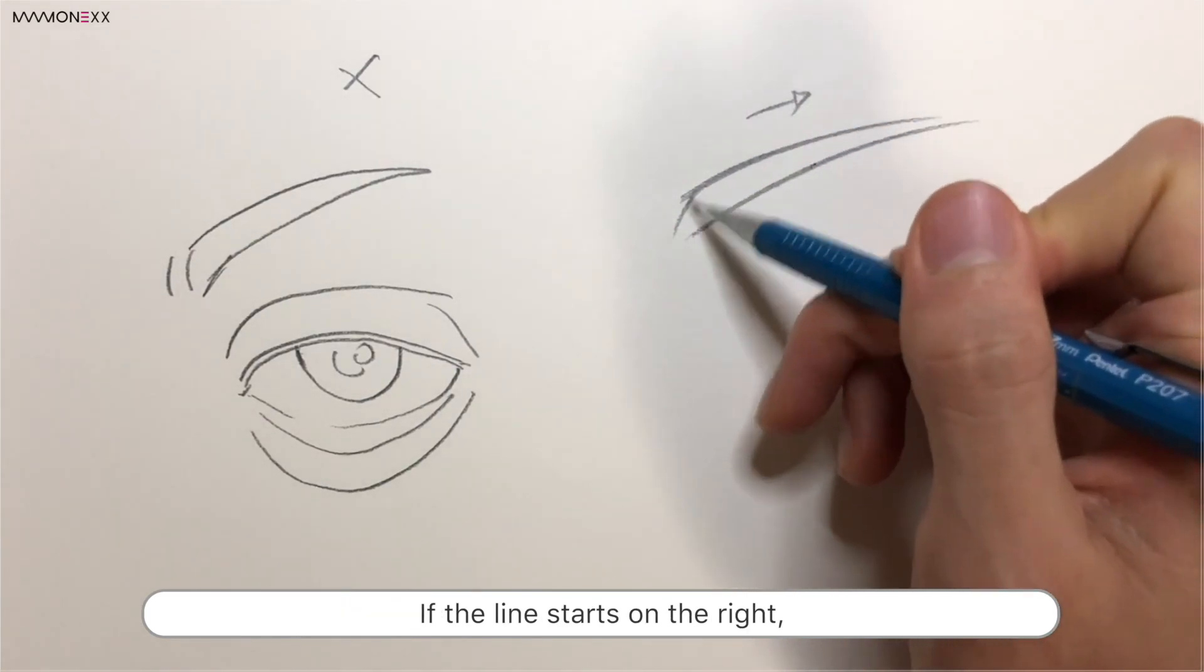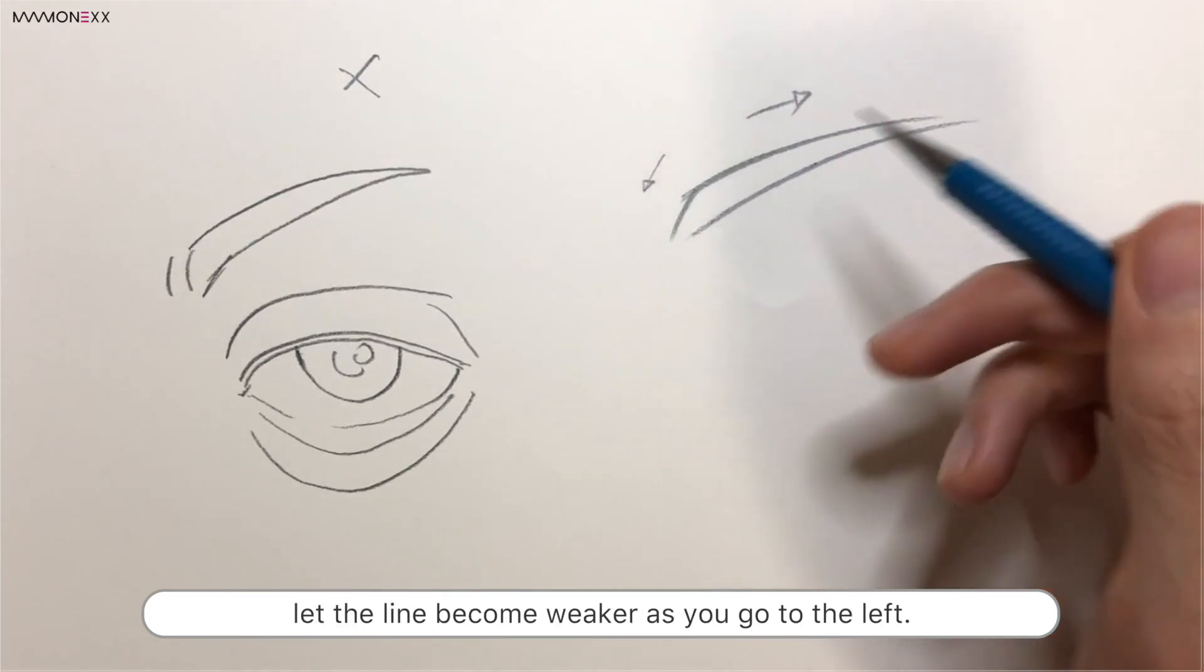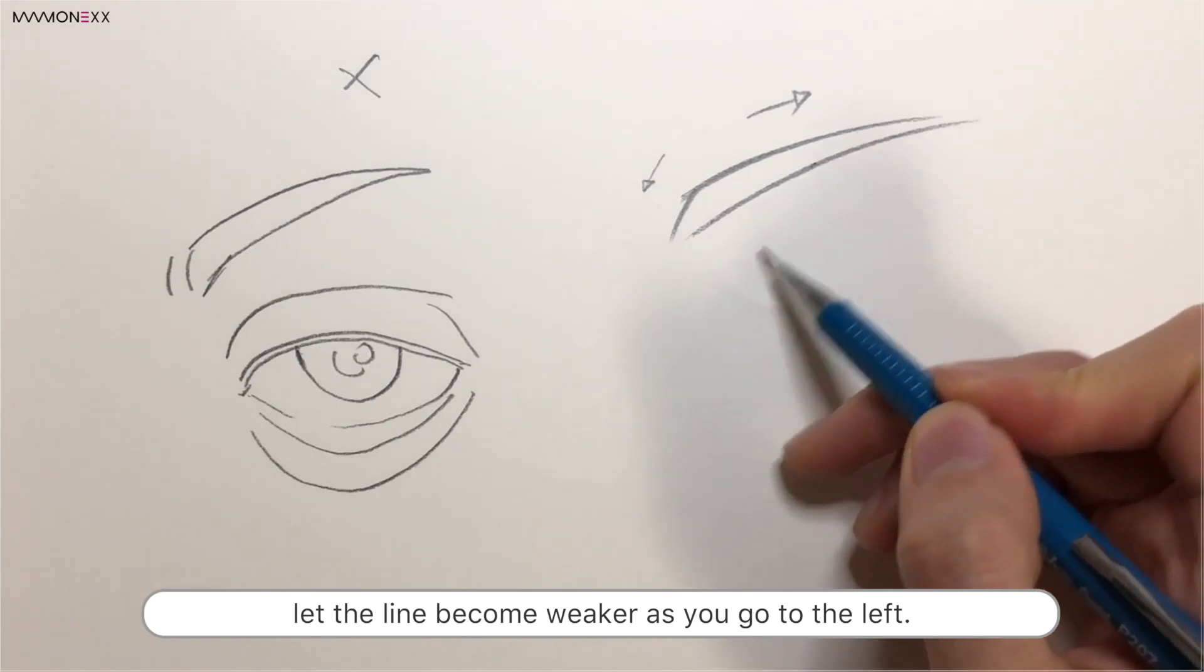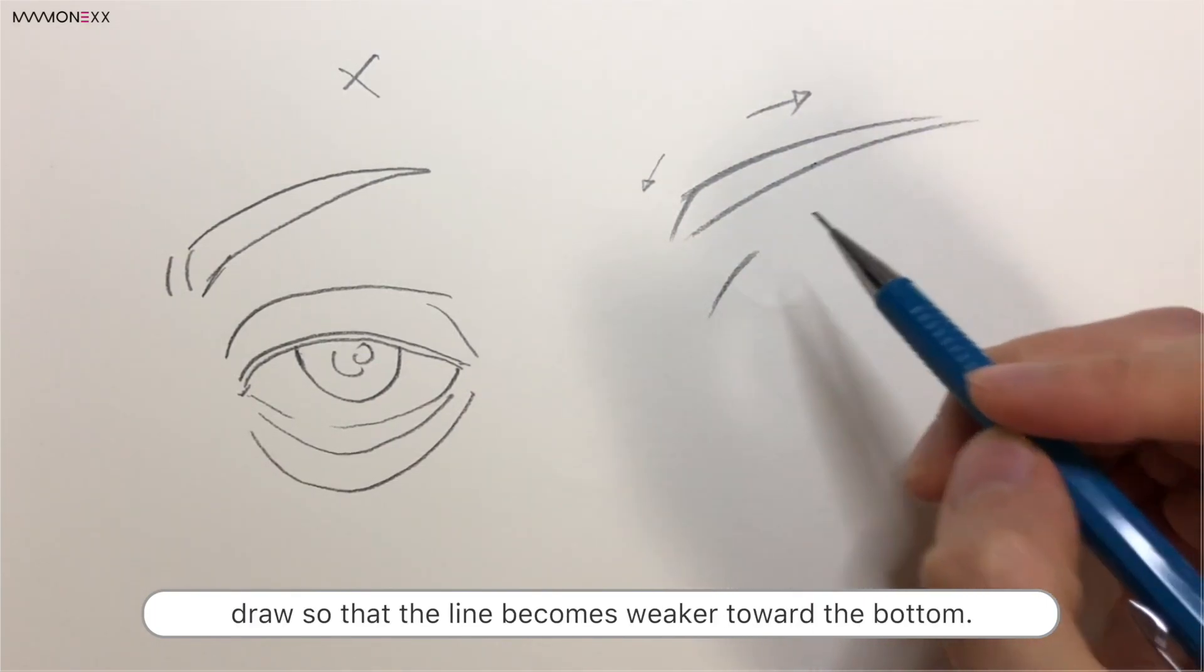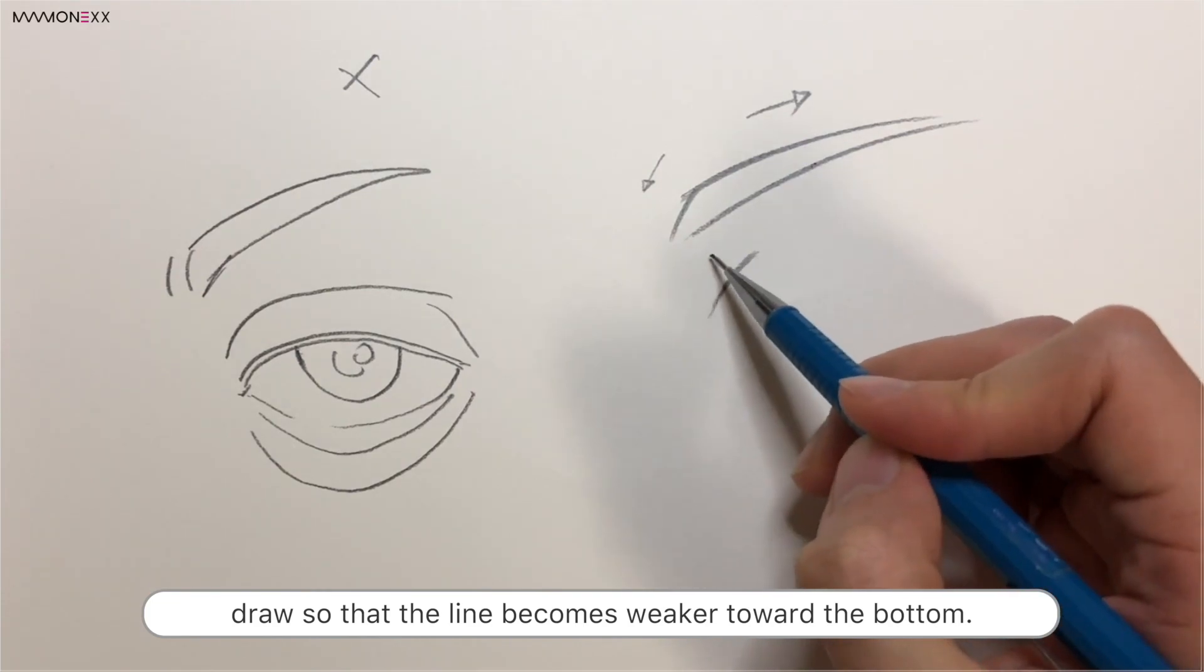If the line starts on the right, let the line become weaker as you go to the left. If the line starts at the top, draw so that the line becomes weaker toward the bottom.